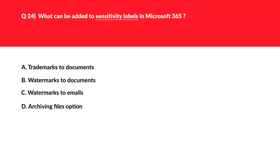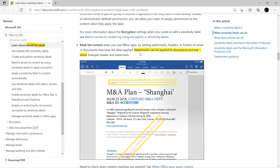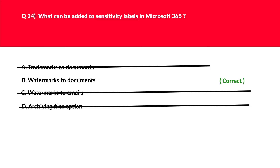This question is related to sensitivity levels. Option D is archiving files — there's no option to archive files since the purpose of sensitivity levels is something else, so we reject this. Option A is trademarks to documents — trademark is completely off topic. Sensitivity levels are related to adding watermarks, not trademarks. Between B and C, both are related to watermarks, but watermarks can be applied to documents and not to emails. Hence we'll keep option B and reject option C. The official documentation clearly states watermarks can be applied to documents but not emails. We got our answer and we'll log this.